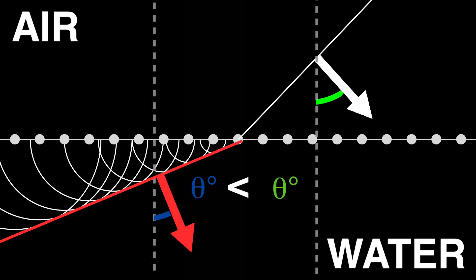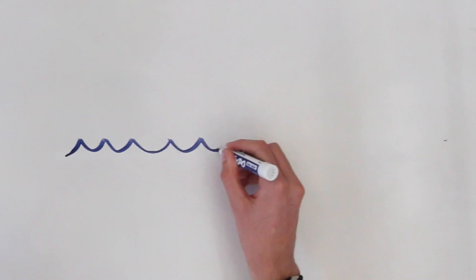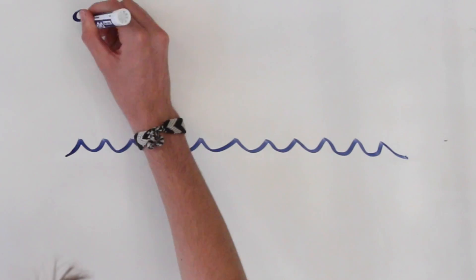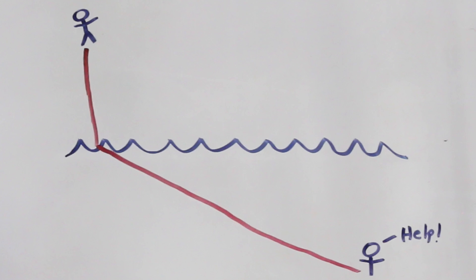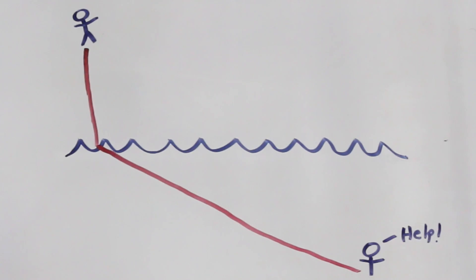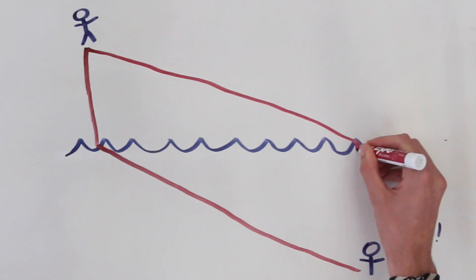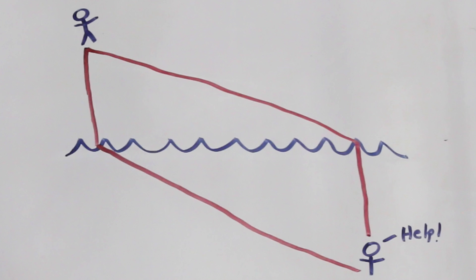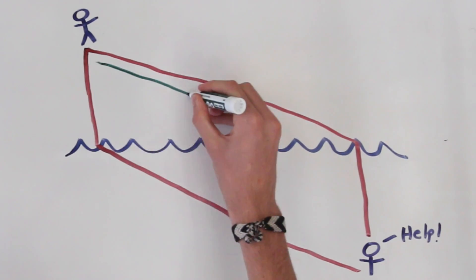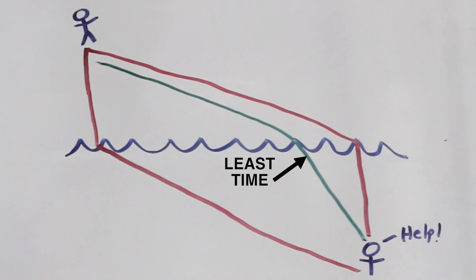Using Fermat's principle of least time, we can see again that the beam takes the shortest time to get from A to B. A smart lifeguard rescuing a drowning person wouldn't run directly to the water and swim a long way, and likewise they wouldn't waste time running a long way to the water for a shorter swim. The smart lifeguard, like the light beam, splits the difference and takes the path that minimizes the travel time to the destination.